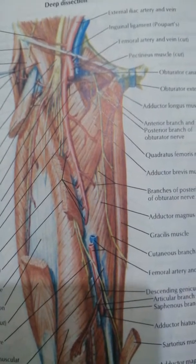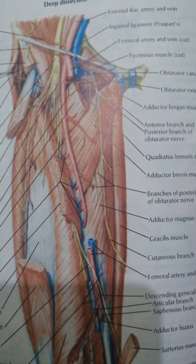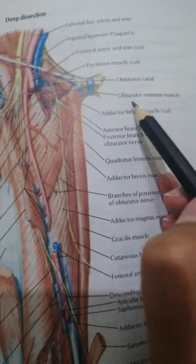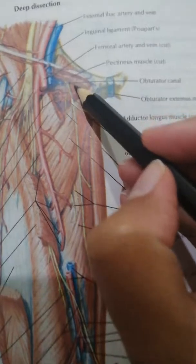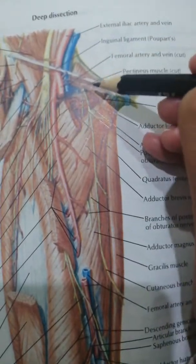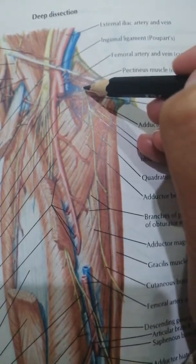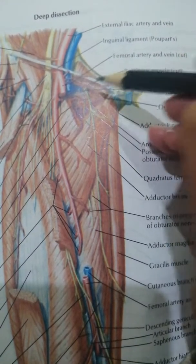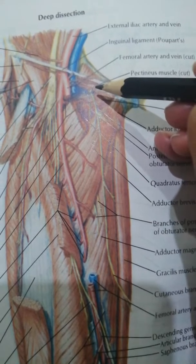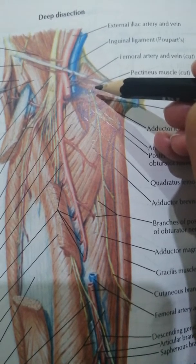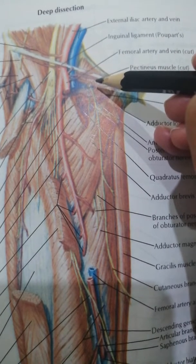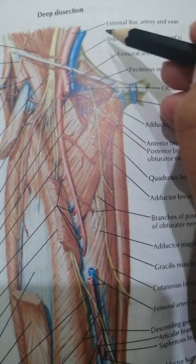In this video we will be talking about the obturator nerve. The obturator nerve is a branch of the lumbar plexus, formed from the ventral divisions of spinal segments L2, L3, and L4.